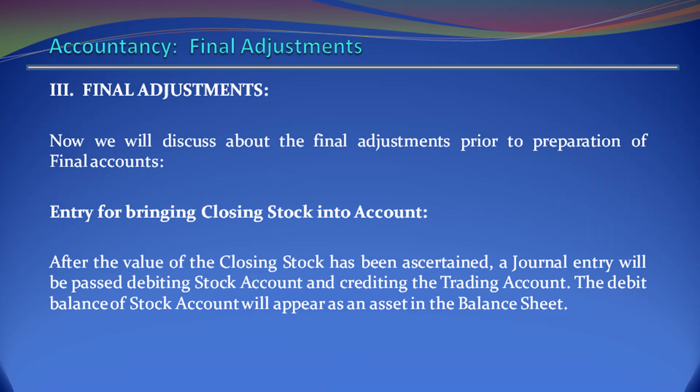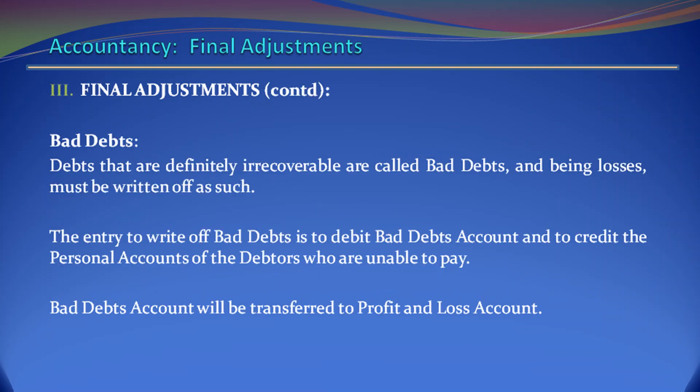Final Adjustments. Entry for bringing closing stock into account: After the value of the closing stock has been ascertained, a journal entry will be passed debiting stock account and crediting the trading account. The debit balance of stock account will appear as an asset in the balance sheet.